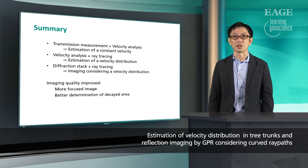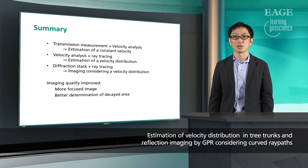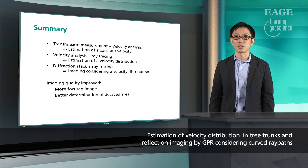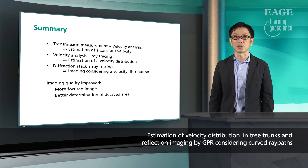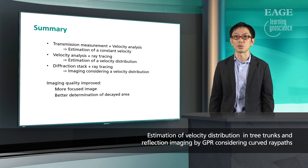So in this e-lecture, I showed some techniques that can be used for tree inspection with radar. By carrying out transmission measurements on the trunk and by performing velocity analysis, we can estimate a constant velocity, which may correspond to the average velocity. If we use ray tracing in the velocity analysis, it is possible to estimate the velocity distribution. Also, if we combine diffraction stacking and ray tracing, it is possible to perform imaging considering velocity distribution and curved ray path. It is illustrated that the imaging quality is improved by those techniques, and we can obtain more focused images that may help better determination of decayed area.